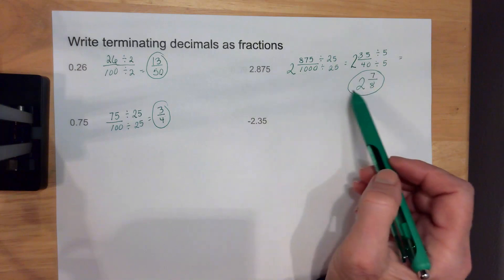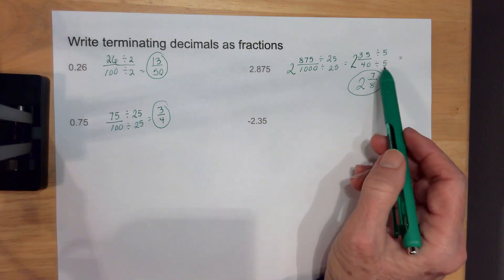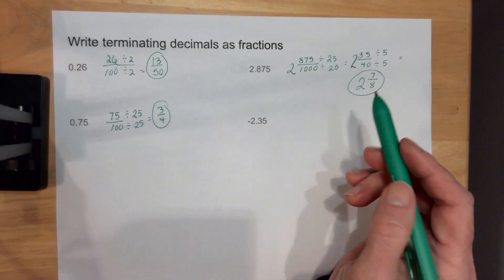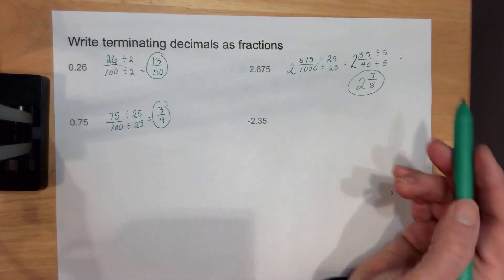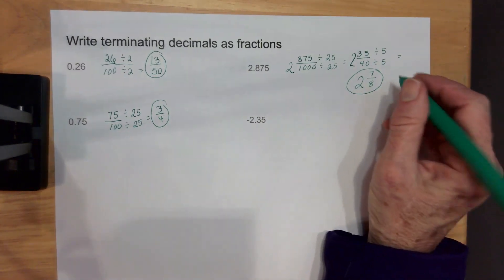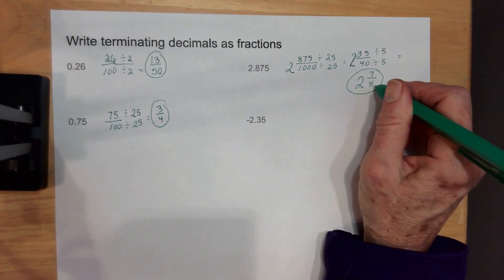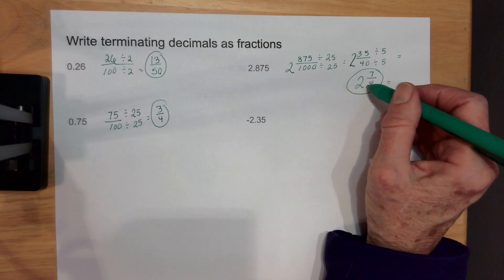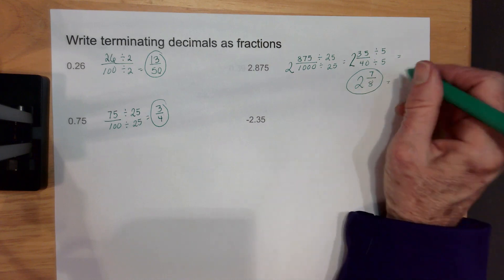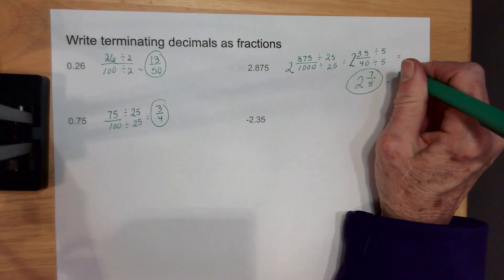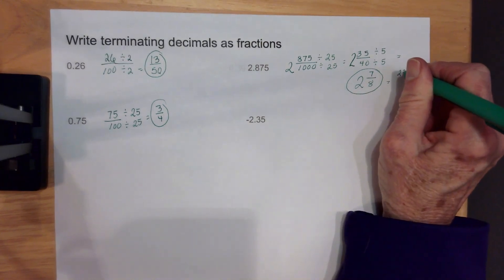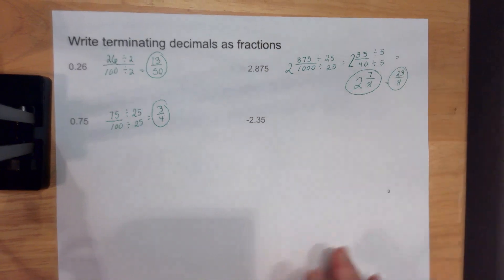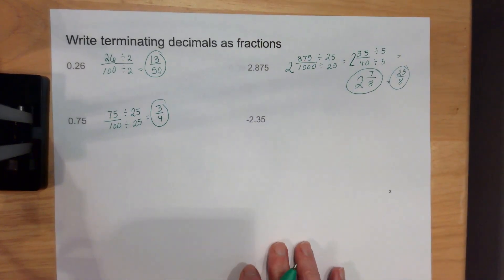If you want to take it one step further, you could make it into an improper fraction, depending on what the instructions ask for. So if I wanted to make it improper, that would be 16 plus 7 more, so that's 23 over 8. Either one of those is an okay answer.